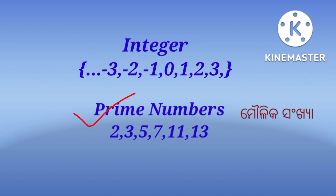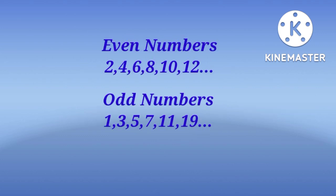Examples are 2, 3, 5, 7, 11, etc. Then we see what is even numbers. The natural numbers which are divisible by 2 are called even numbers or jugma sankhya.